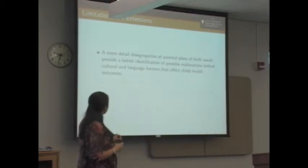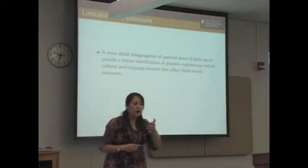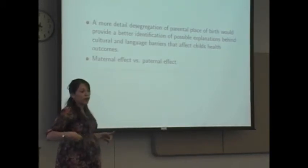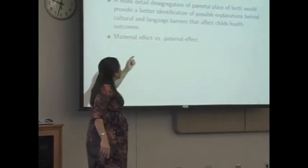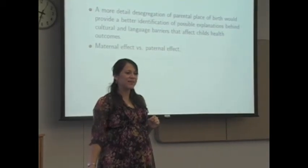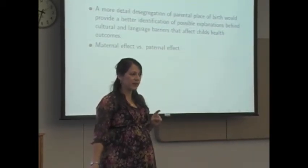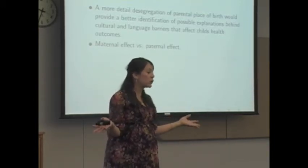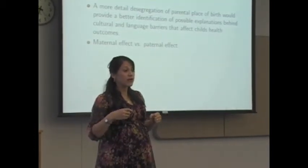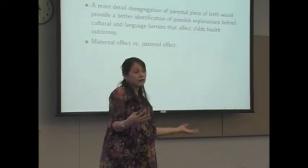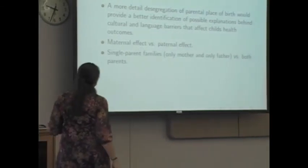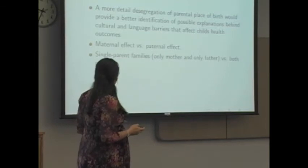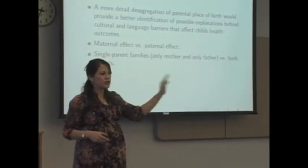Another extension is to segregate the parental place of birth, so I can see country by country what could be the explanation behind these mixed findings. Also, maternal effect versus paternal effect — here I just said immigrant family means at least one parent is an immigrant, but I don't identify whether the immigrant is the mother or the father. In some cultures, maternal effects are much bigger — mothers tend to be the ones taking their kids to the hospital. Another comparison would be single-parent families: only mother versus only father versus both parents present.